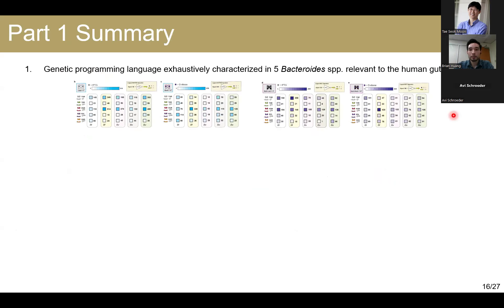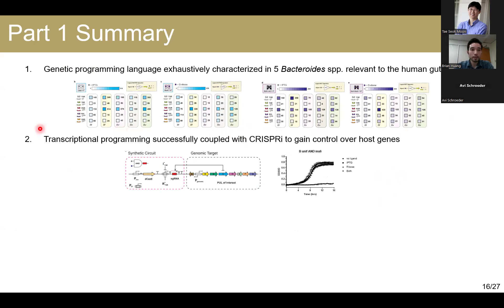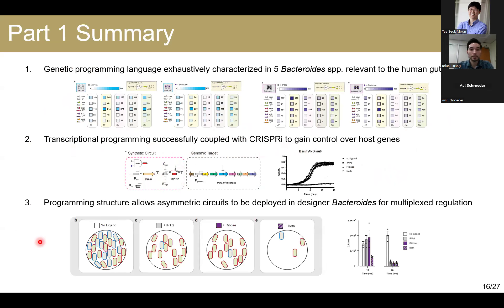Just as a quick summary of this first part, we began by adapting and exhaustively characterizing our transcriptional programming technology in five Bacteroides species relevant to the human gut. We then expanded this system to gain control over host genes by coupling our transcriptional programs with CRISPR interference. Finally, we applied this to regulate polysaccharide utilization in multiple Bacteroides to demonstrate multiplexed regulation and community control.